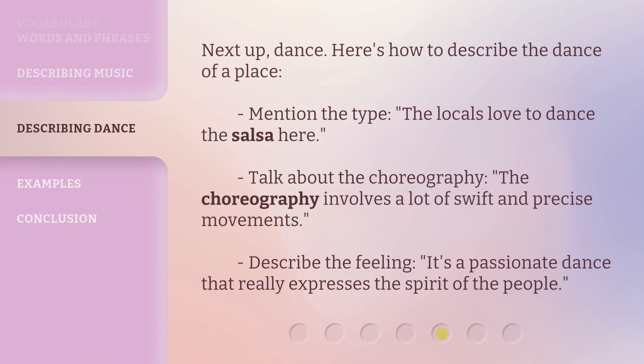Next up, dance. Here's how to describe the dance of a place. Mention the type: 'The locals love to dance the salsa here.' Talk about the choreography: 'The choreography involves a lot of swift and precise movements.' Describe the feeling: 'It's a passionate dance that really expresses the spirit of the people.'